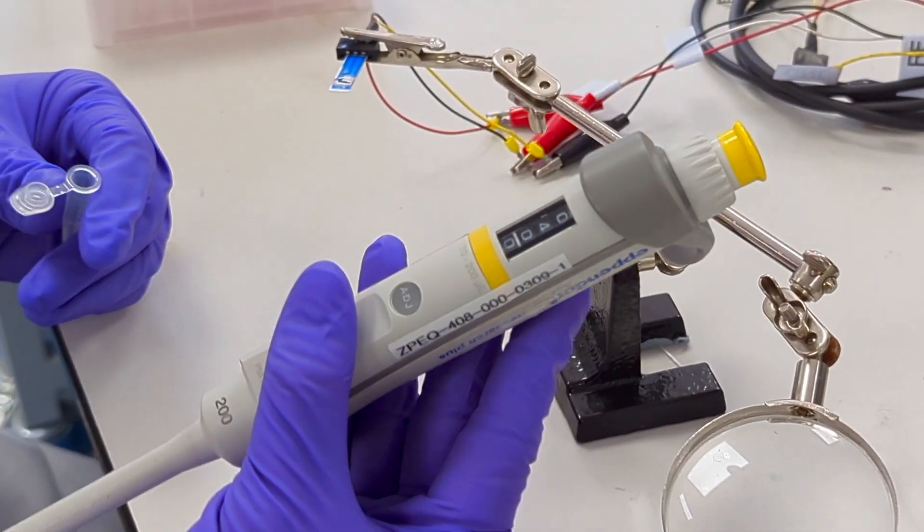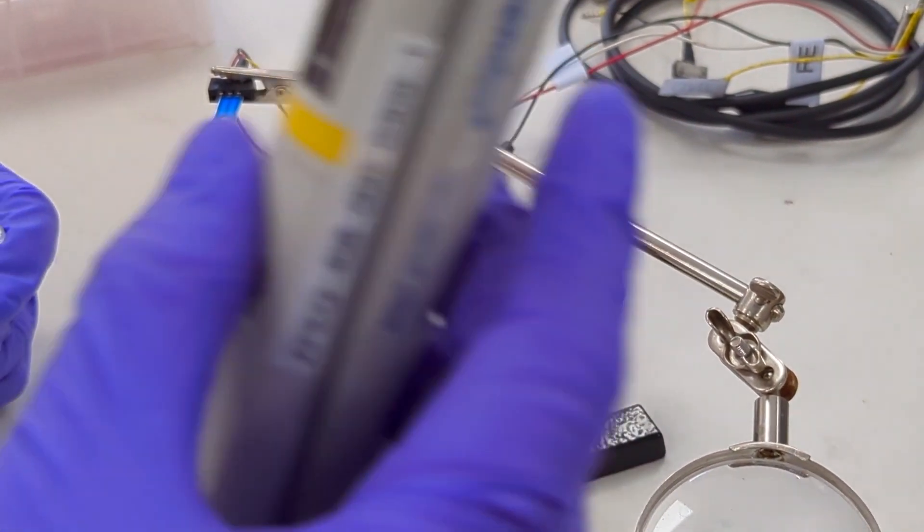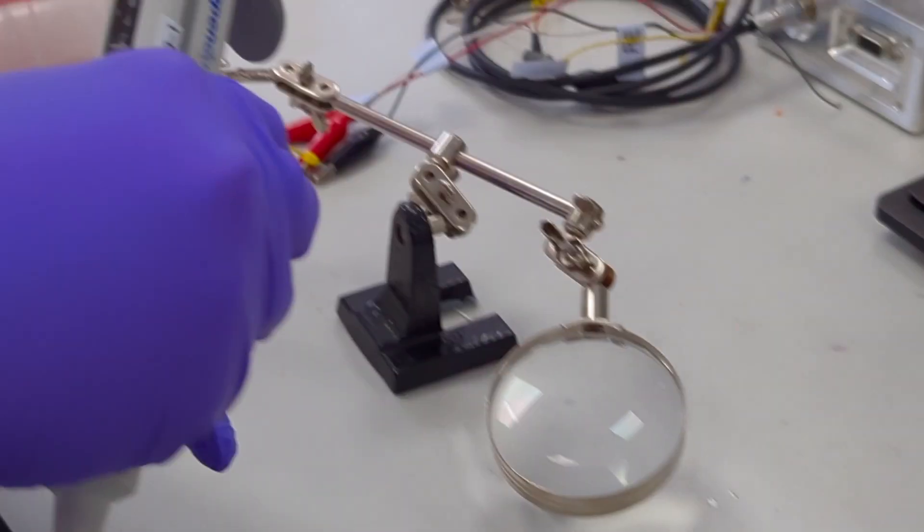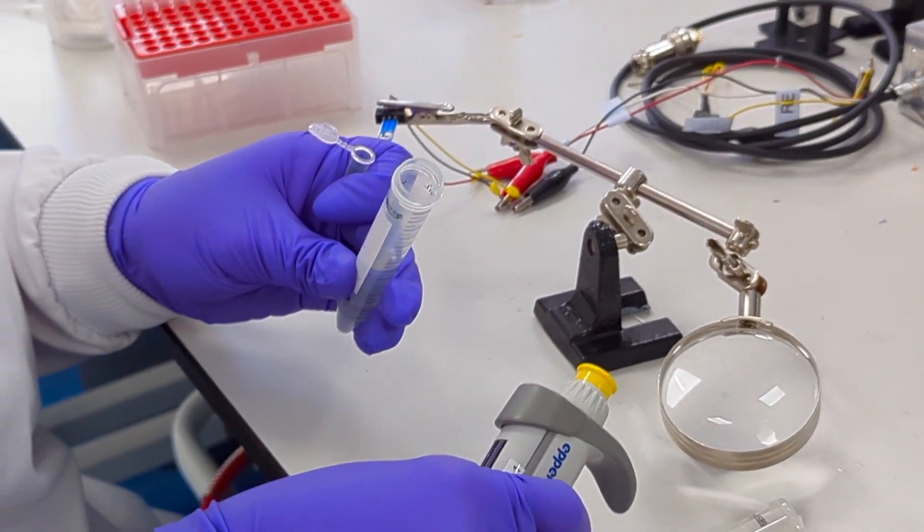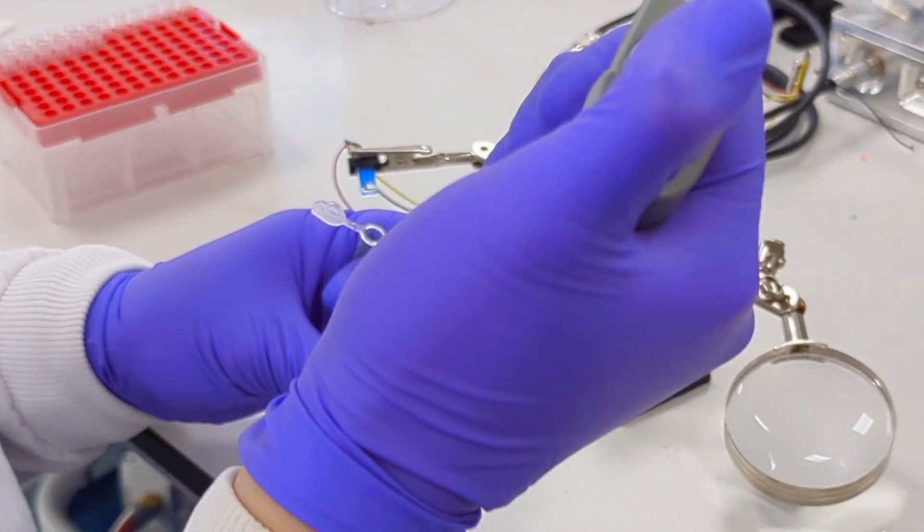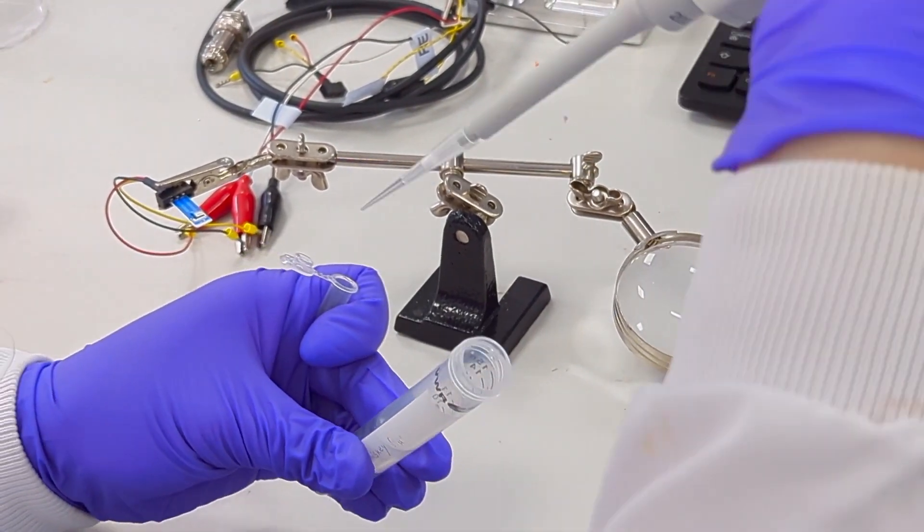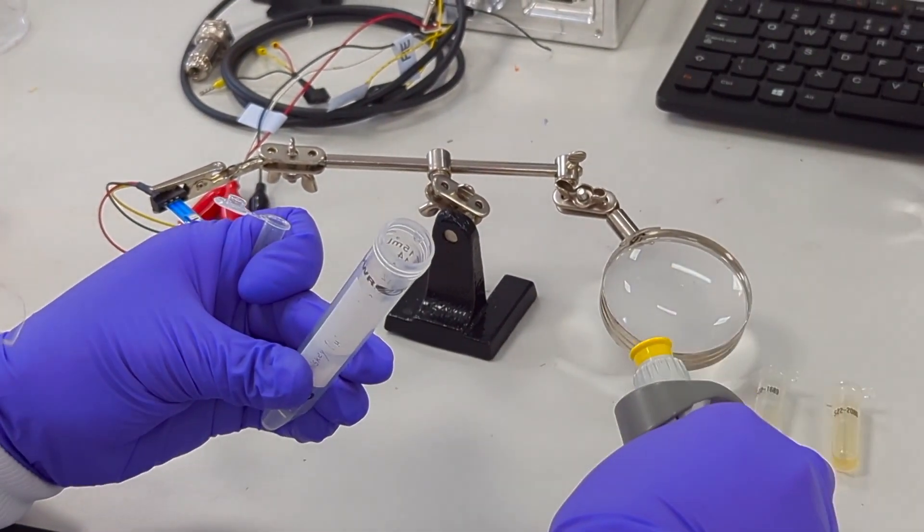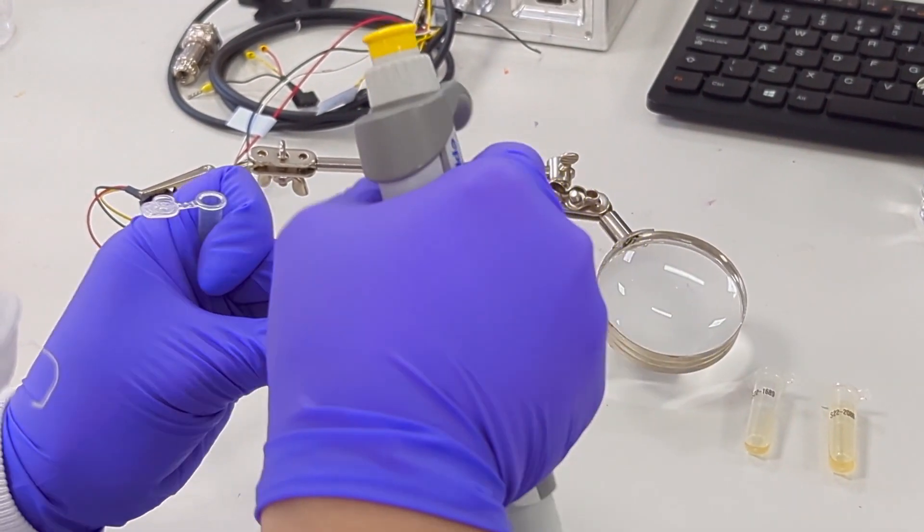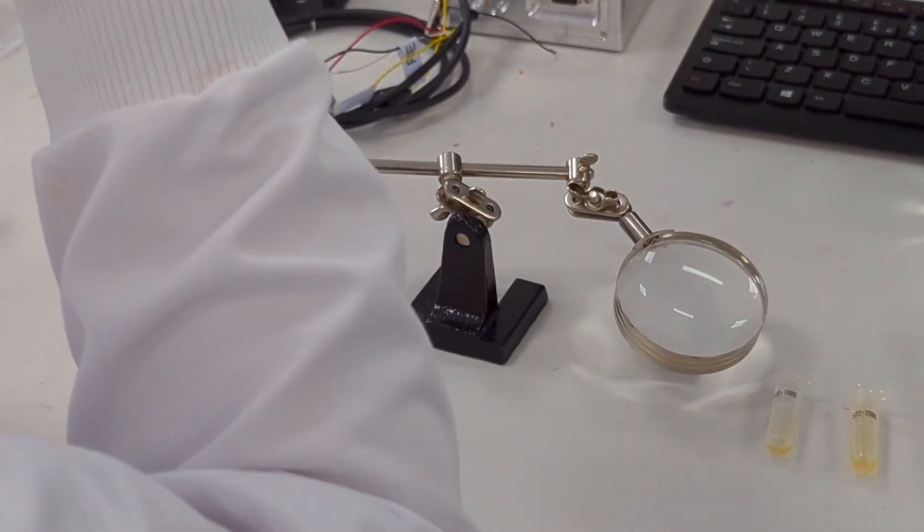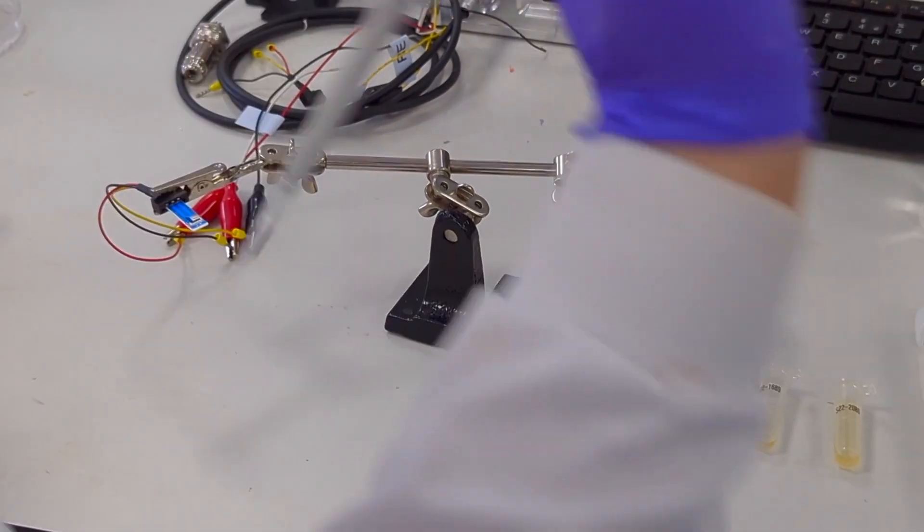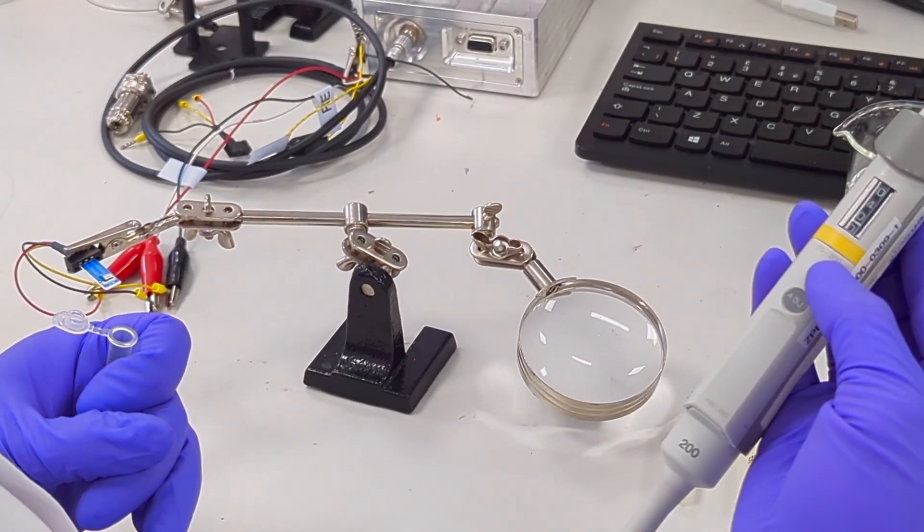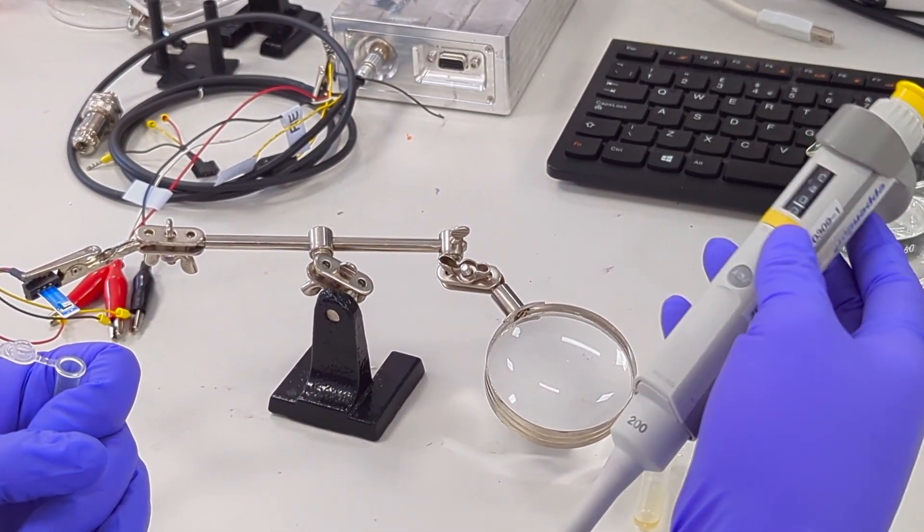We prepare a second sample with the similar procedure we followed last time. We prepare 40 microliters of the whiskey buffer solution into a small falcon tube, followed by 40 microliters of the second whiskey sample.